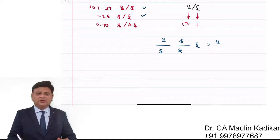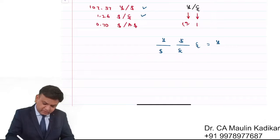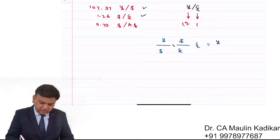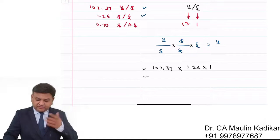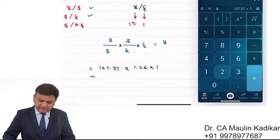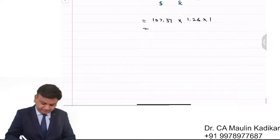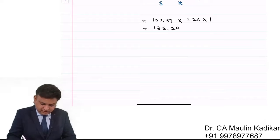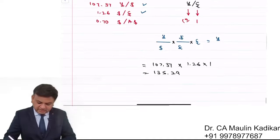The yen currency is available per dollar. We put it in the equation: yen per dollar multiplied by dollar per pound. So the answer is 107.31 multiplied by 1.26, which comes to 135.2862 — approximately 135.29 yen per pound.